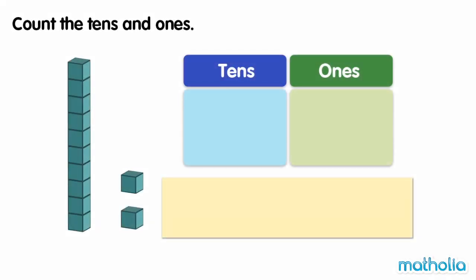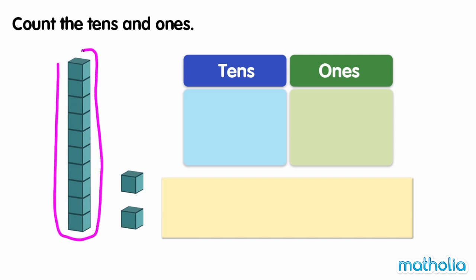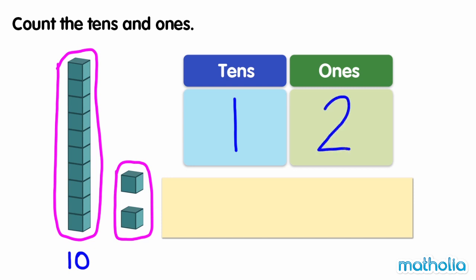Count the tens and ones. There is one ten. One ten is ten. There are two ones. Two ones are two. One ten and two ones make twelve. Twelve is equal to one ten, two ones.